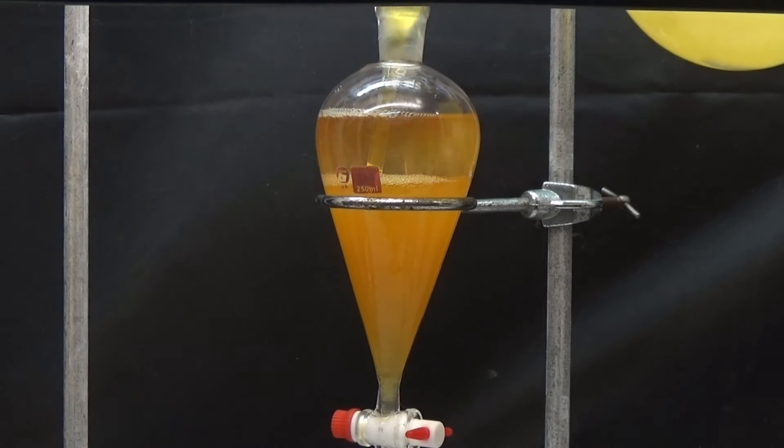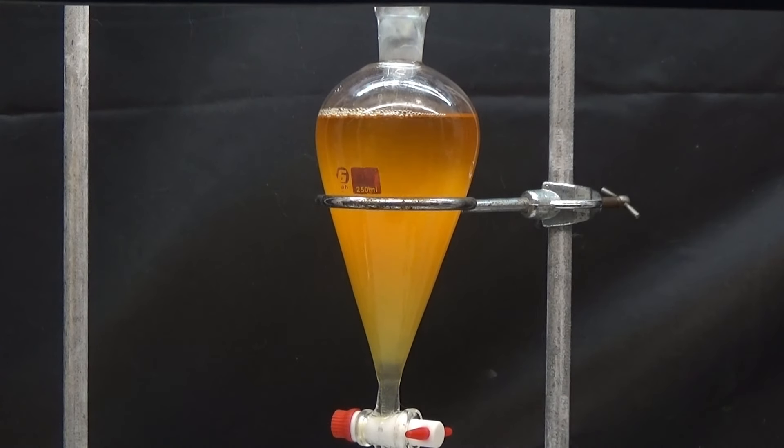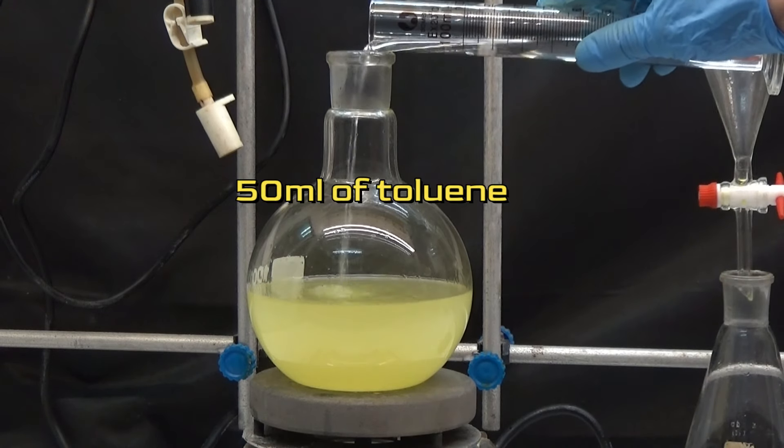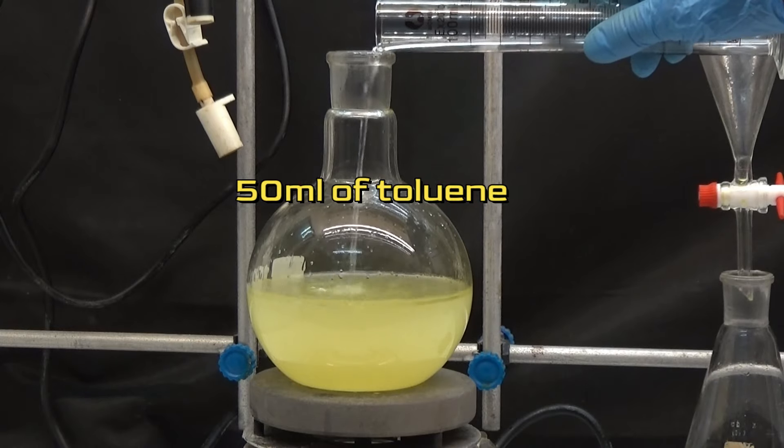Separate the aqueous phase from the organic phase using a separatory funnel. After washing the aqueous phase with 50 milliliters of toluene.